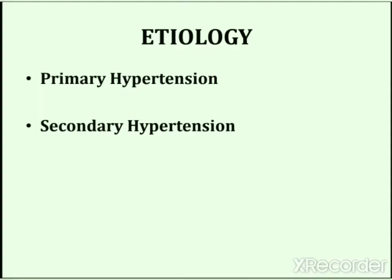The causes of secondary hypertension include congenital narrowing of the aorta, renal diseases, endocrine disorders, neurological disorders, sleep apnea, medications like contraceptive pills, non-steroidal anti-inflammatory drugs, cocaine, and cirrhosis of the liver.